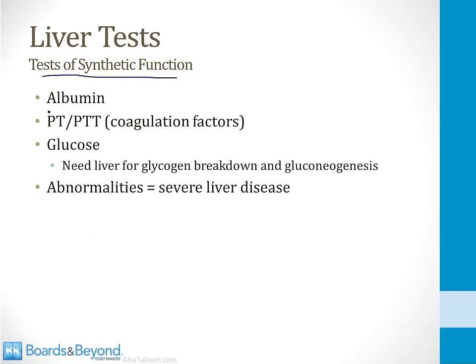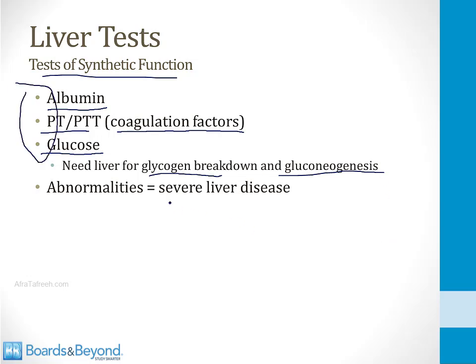True liver function tests measure something the liver is supposed to produce normally — these are tests of synthetic function. When the liver is truly failing, the albumin level will get low, because it's the liver's job to produce albumin. When the liver is truly failing, the PT and PTT tests will begin to rise, because the liver is failing in its job of producing coagulation factors. And if the liver is really failing, the glucose level will begin to fall, because you need the liver to break down glycogen and perform gluconeogenesis to maintain a fasting glucose level. These abnormalities indicate severe liver disease and suggest that the liver is failing.